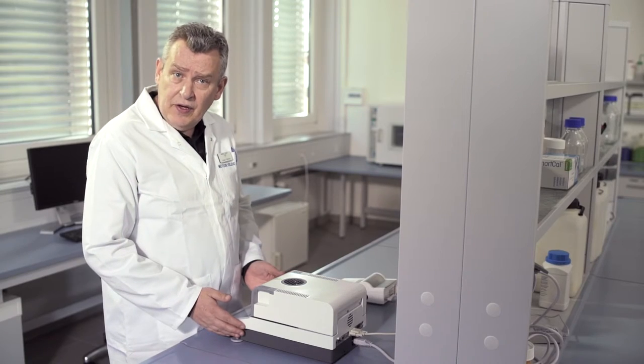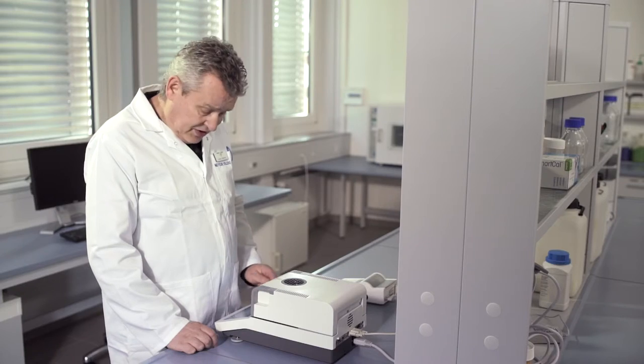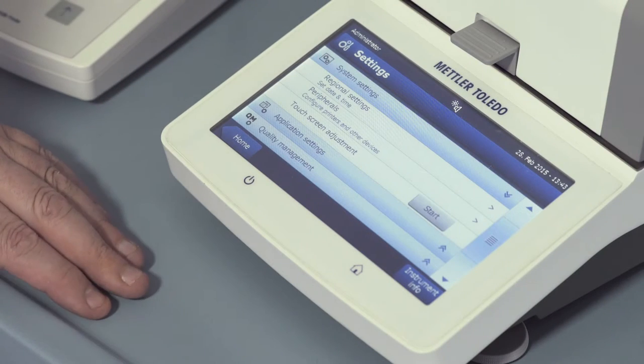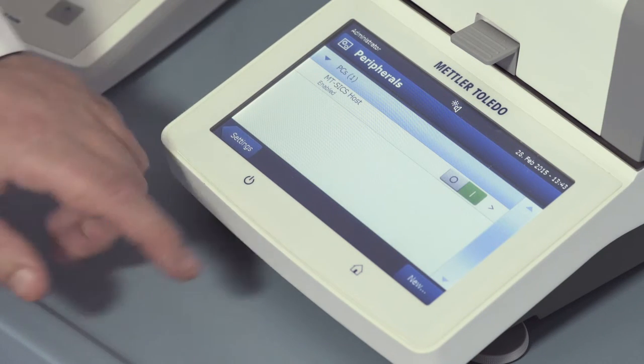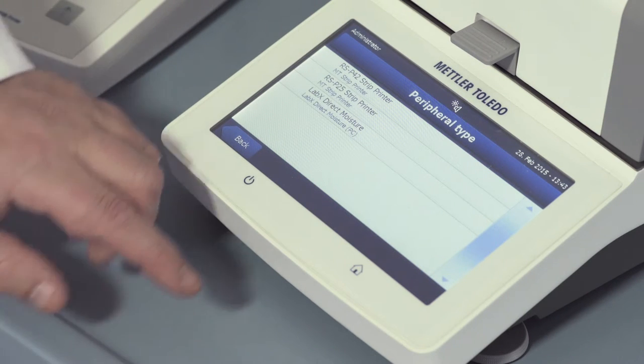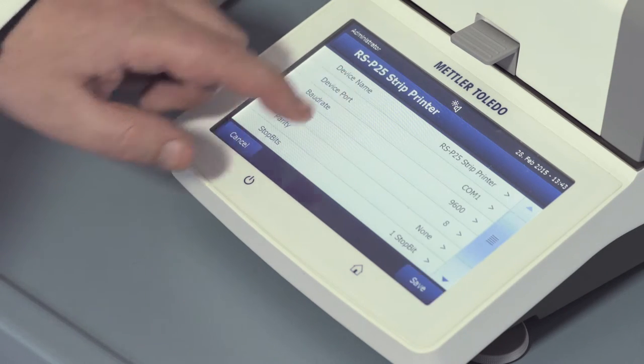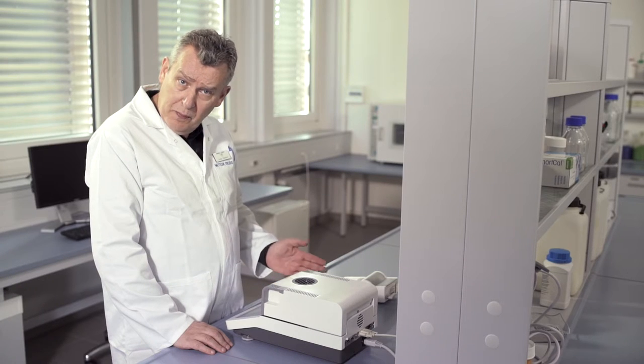To add a printer, enter the settings menu, system settings, peripherals, new, and select the RSP25 strip printer. This printer automatically detects the RS232 settings.